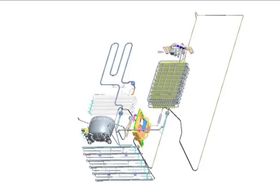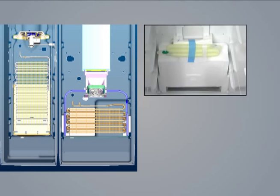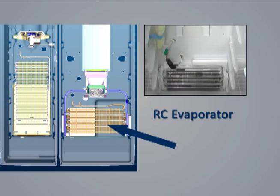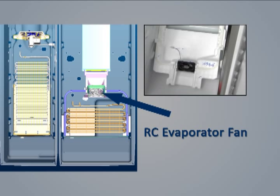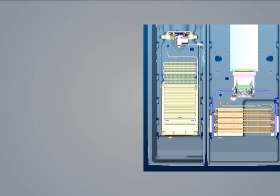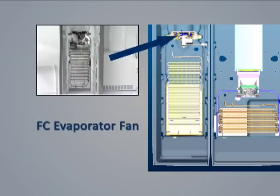Think of the two compartments as individual refrigerator systems controlled by a main board making decisions based on temperature sensing thermistors and the program software. On the right side of this cutaway, we can see the actual location of the RC evaporator and the RC fan. On the left side of this diagram, we see the FC evaporator and the FC fan.